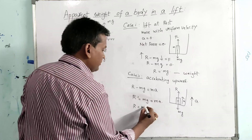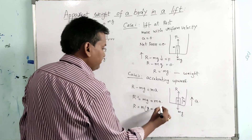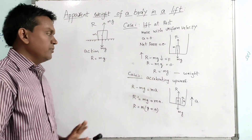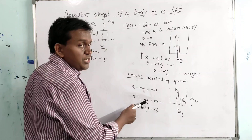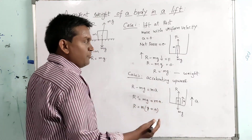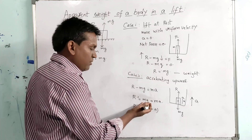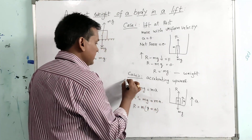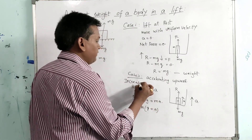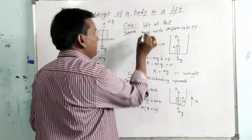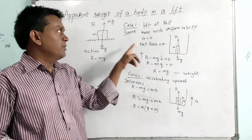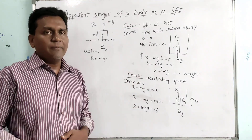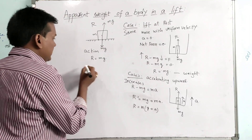The reaction force R equals m(g + a). When the lift is at rest, R equals mg, which is our actual weight. But here R equals mg plus ma, meaning our weight increases by ma. So when the lift is accelerating upward, our apparent weight increases. When the lift is at rest or moving with uniform velocity, weight remains the same.